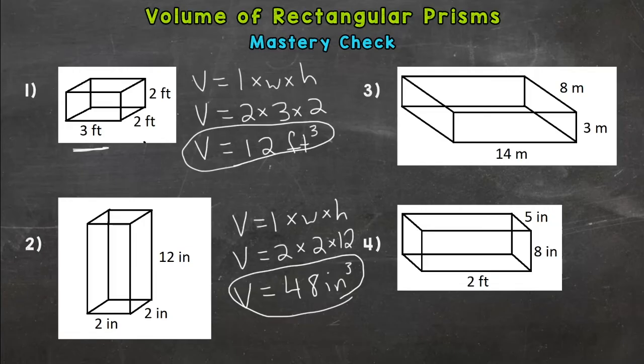All right, let's go over to number three. Volume equals length times width times height. Plug in 14 times 8 times 3, and that will give us a volume of 336 cubic meters.